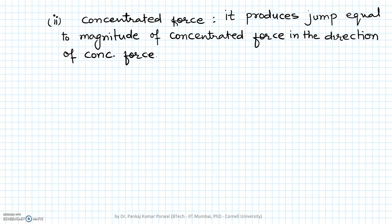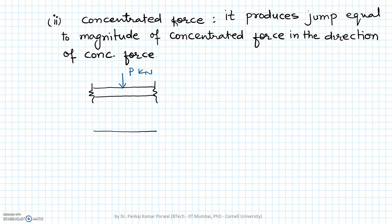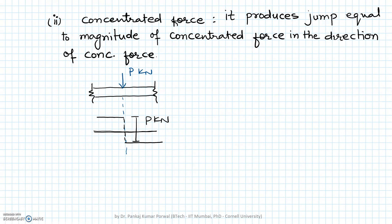Let's see this by an example. Consider a segment of the beam with a concentrated force of magnitude P kN. The shear force diagram will be constant up to that point, and at the location of the concentrated force there will be a jump equal to P kN. After that the diagram will continue at the new level.